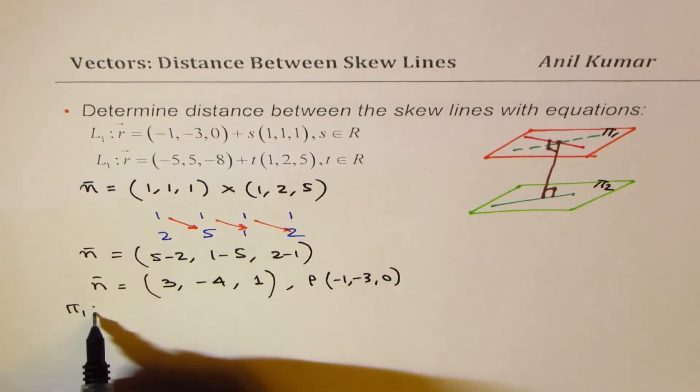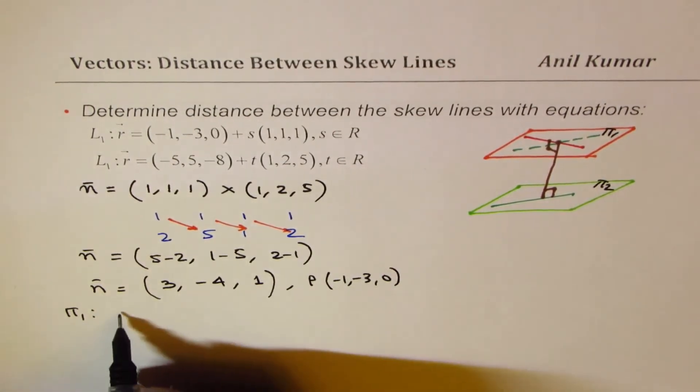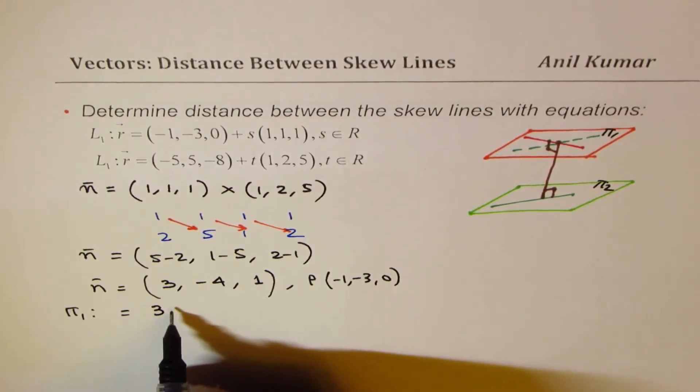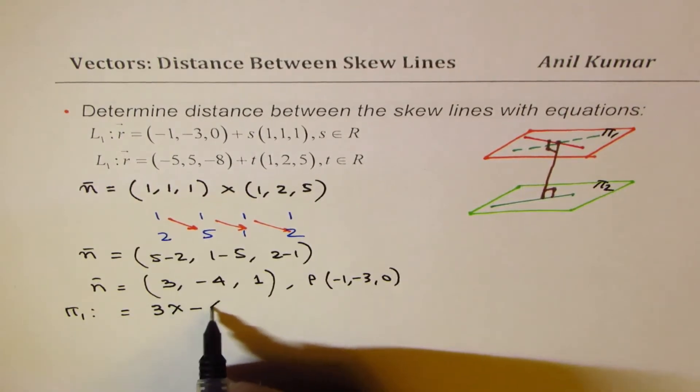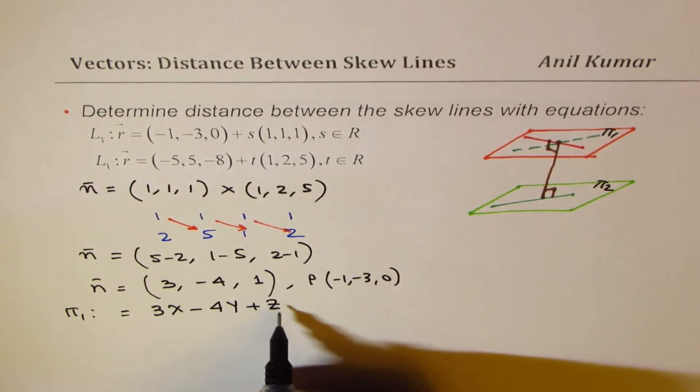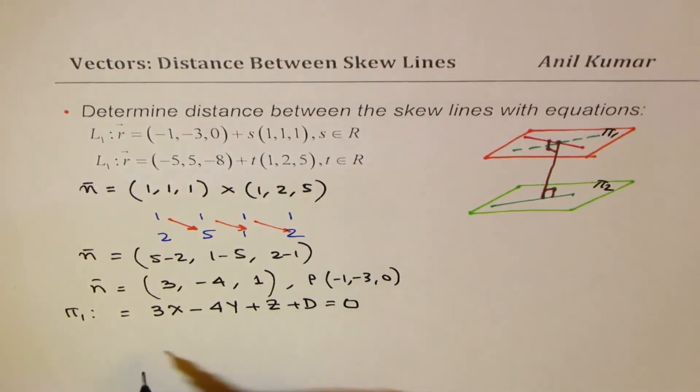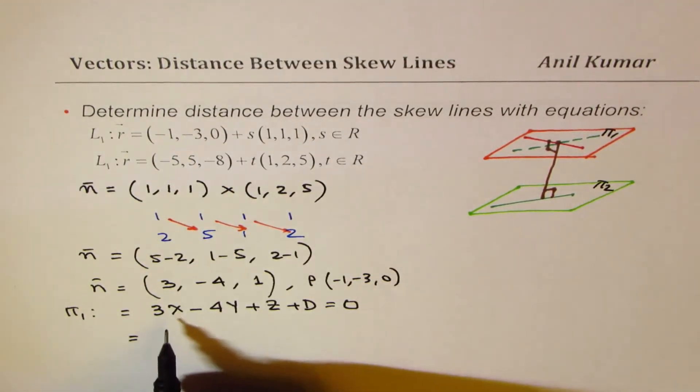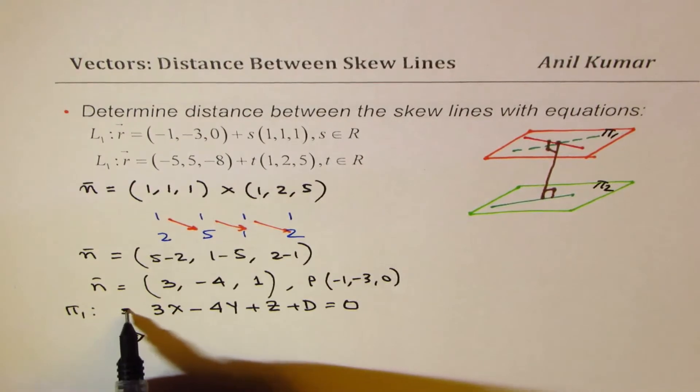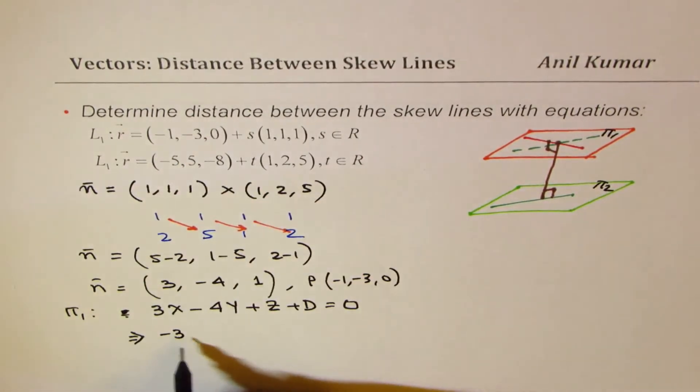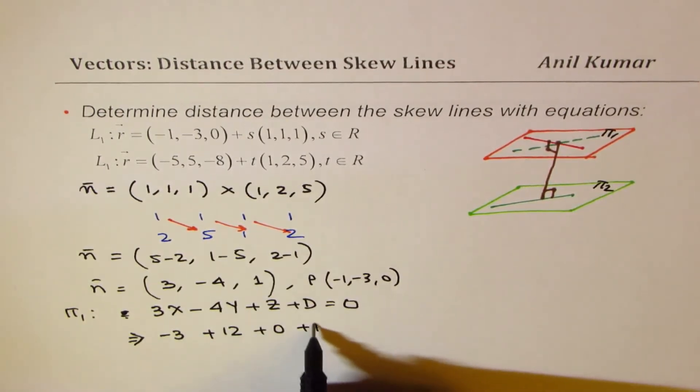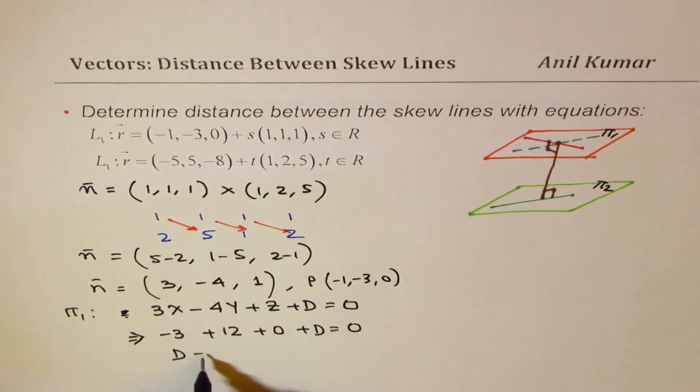to find the Cartesian equation of plane 1. So that becomes, these are the coefficients: 3x minus 4y plus z plus d equals to 0. To find d, we'll substitute minus 1, minus 3, 0. So what we get here is, substituting minus 1 we get minus 3, that gives us plus 12, z is 0 so that is 0, plus d equals to 0, so d is equal to minus 9. So 12 minus 3 is plus 9, taking it on the other side.